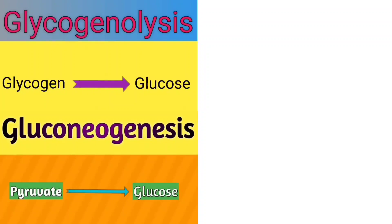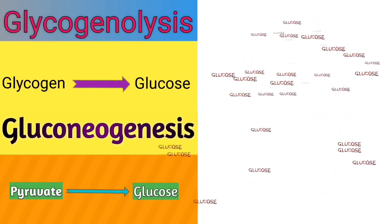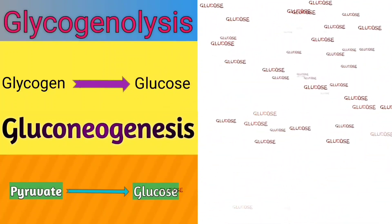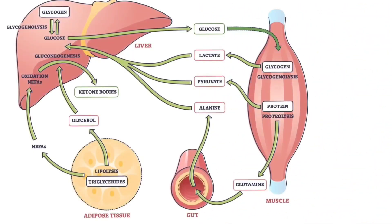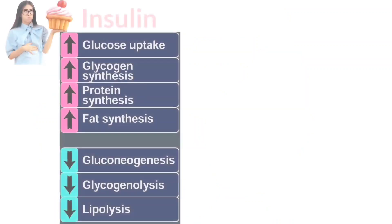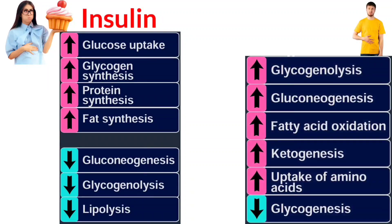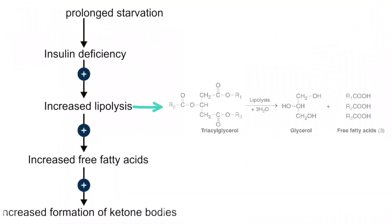While glycogenolysis and gluconeogenesis are trying to maintain glucose levels, lipolysis is also increased to provide fatty acids. In the well-fed state, insulin inhibits lipolysis. But during starvation, insulin levels are very low and glucagon is elevated, so lipolysis is activated, releasing fatty acids as another energy source.